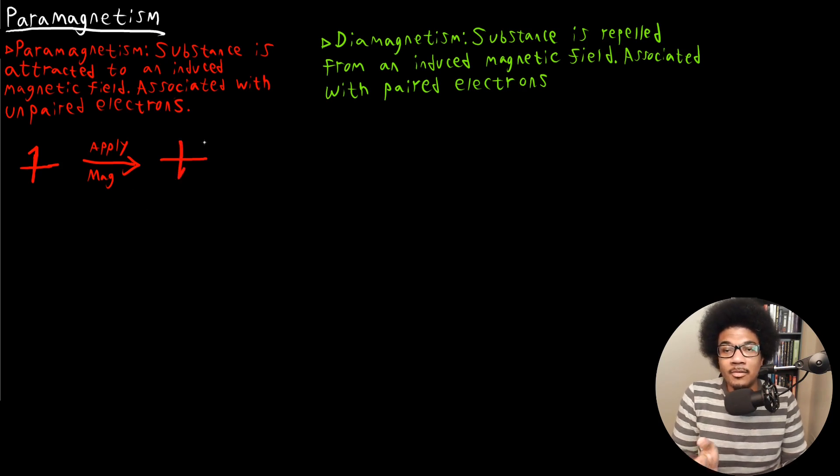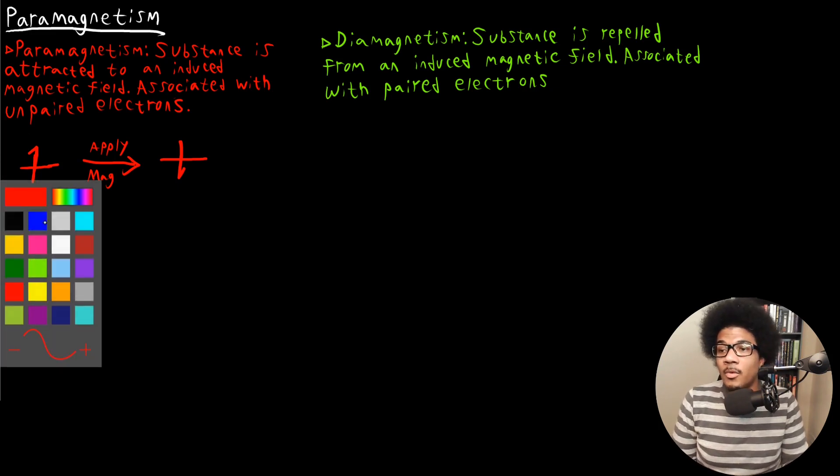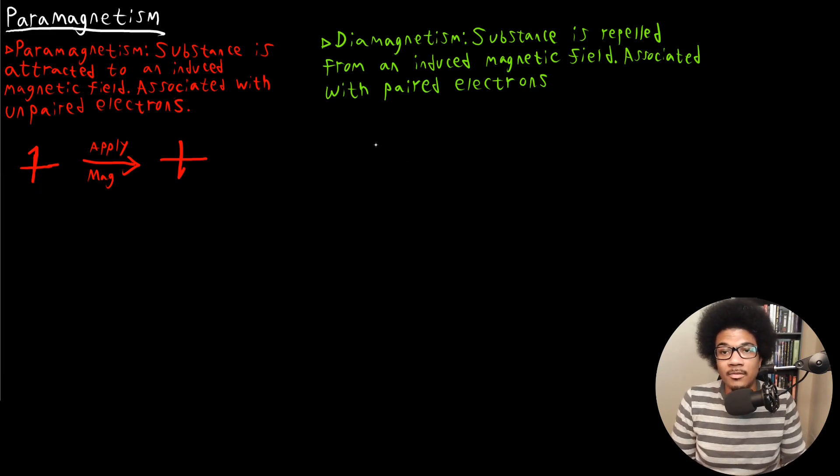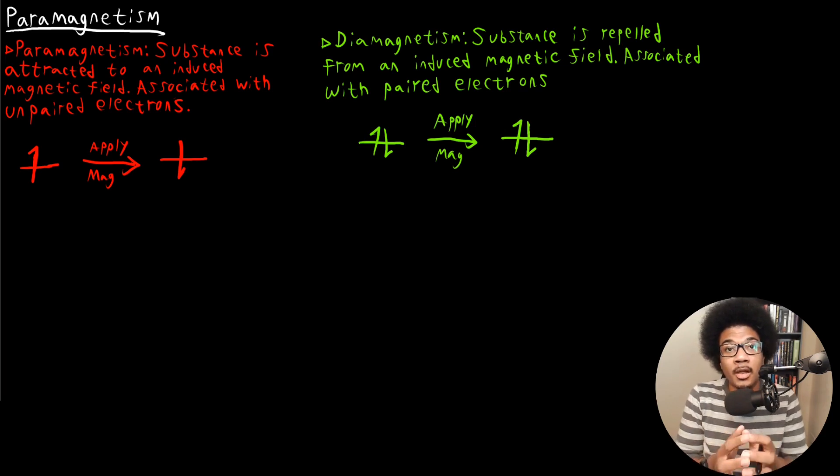But when you have paired electrons, so let's go to these two paired electrons, and we apply a magnetic field here, then it will have no effect on the orientation of these electrons. It won't affect these electrons because they're paired.